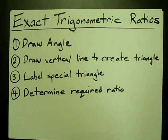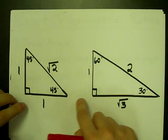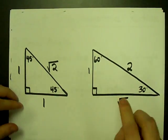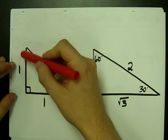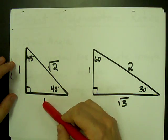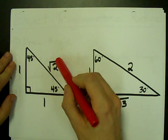But one thing I do want to point out absolutely is that these are your two special triangles that you're going to have to memorize. One of them has two 45 degree angles, the side lengths are 1, 1, and the hypotenuse is root 2.